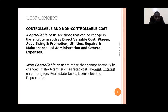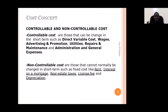Controllable costs are those that can be changed in the short term. They are able to change in a short period, like direct variable costs — wages, advertising, promotions, utilities, maintenance costs, administration and general expenses. You can control them — you can decide to minimize or increase them. Food cost and beverage cost are controllable costs, and managers are going to be evaluated on how they control their food or beverage cost.